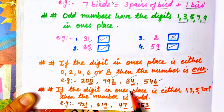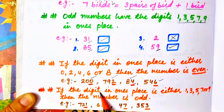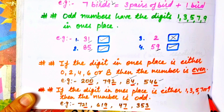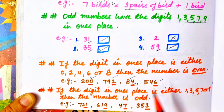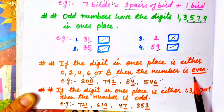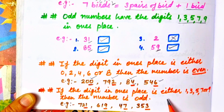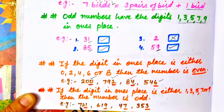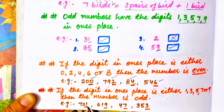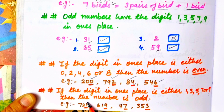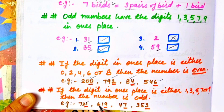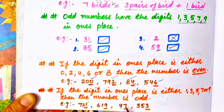If the digit in the ones place is 1, 3, 5, 7, or 9, then the number is odd. We check only the ones place — not the tens place or hundreds place. So 721: ones place is 1, which is our odd number. 619: ones place is 9, this is our odd number. 47: ones place is 7, odd number. And 353: ones place is 3, this is our odd number.